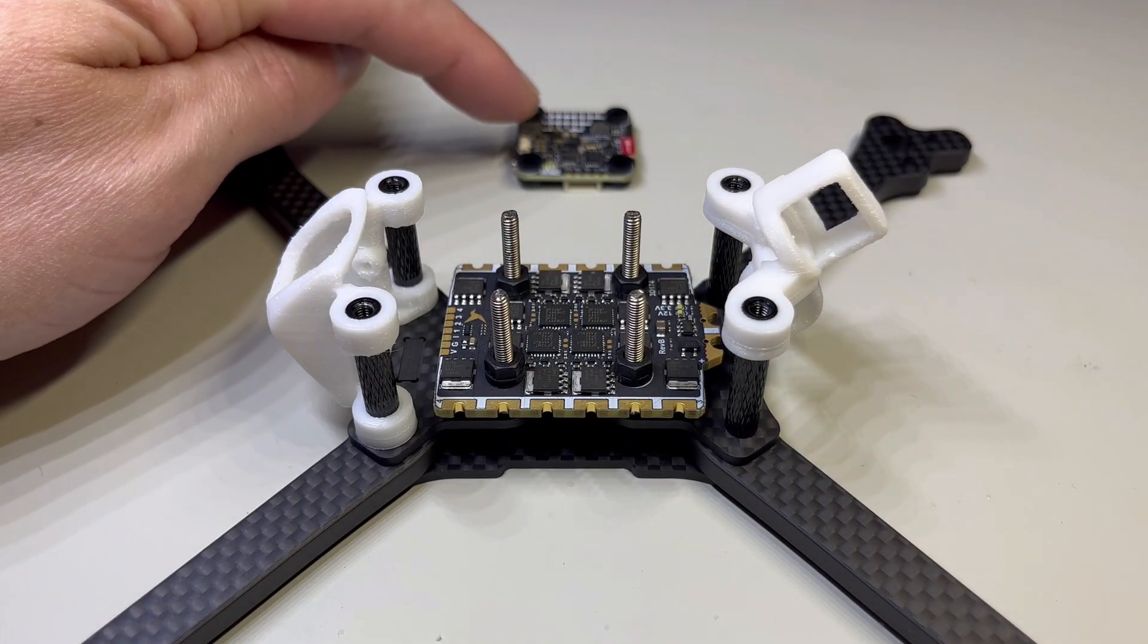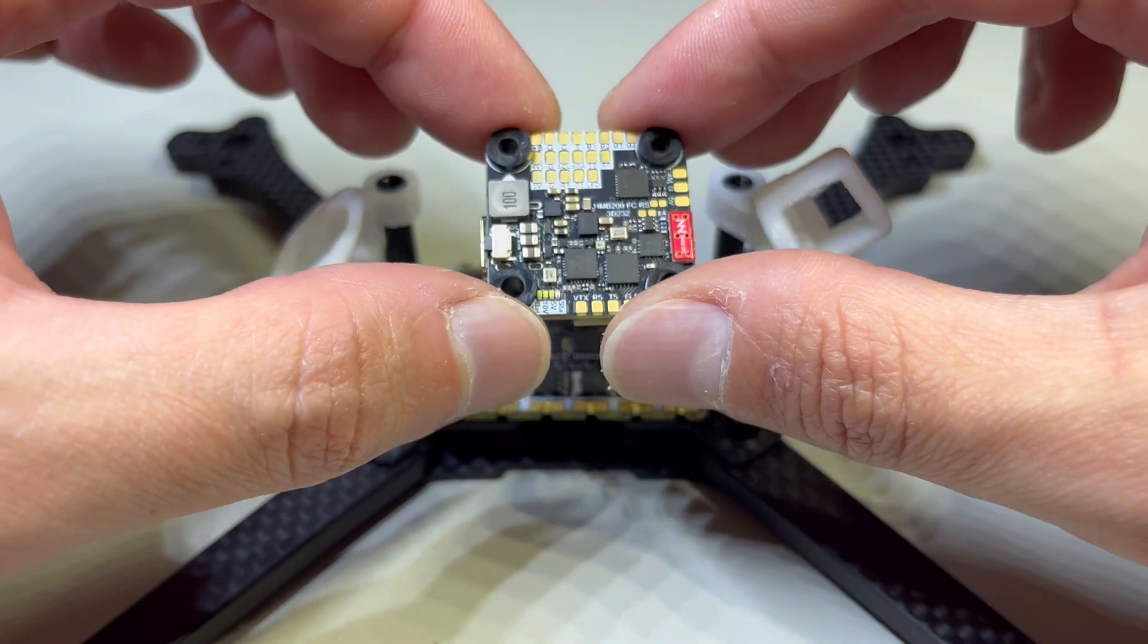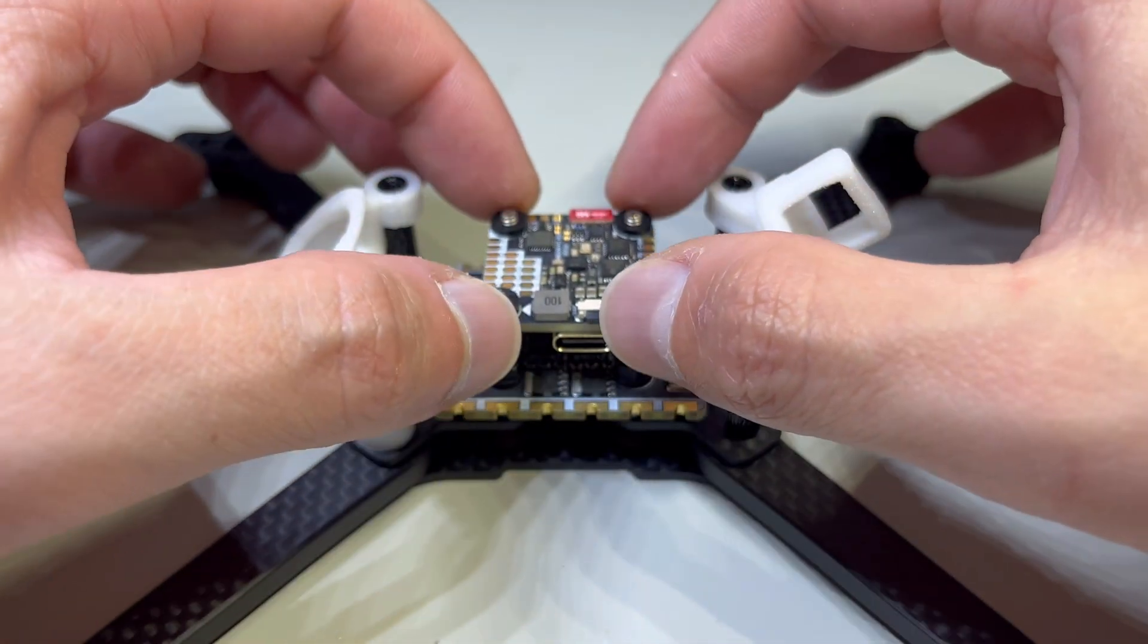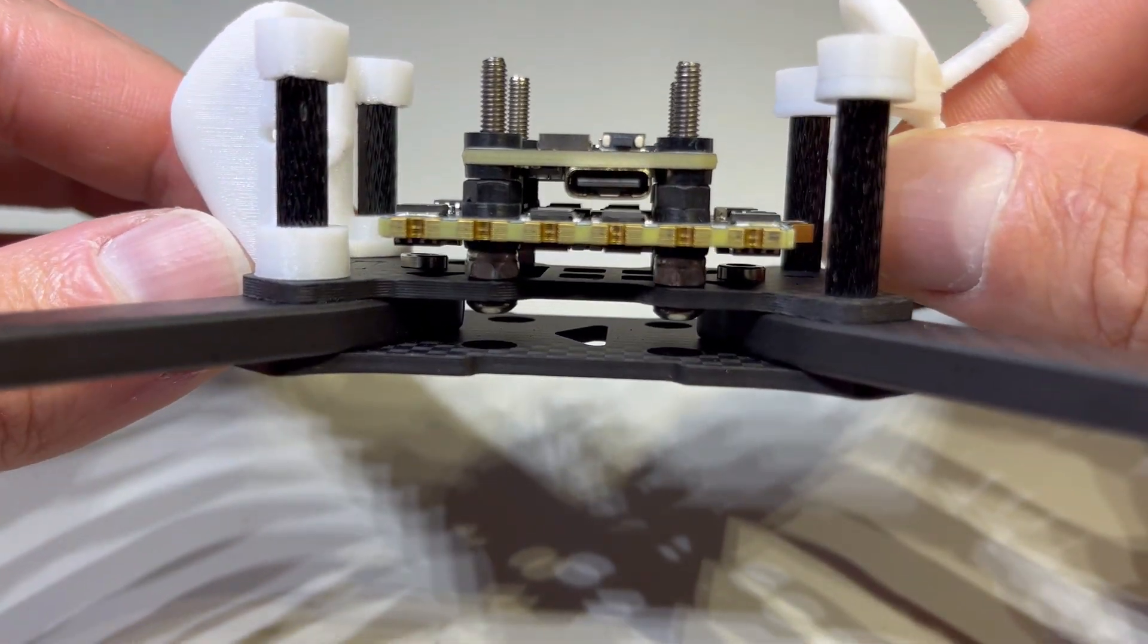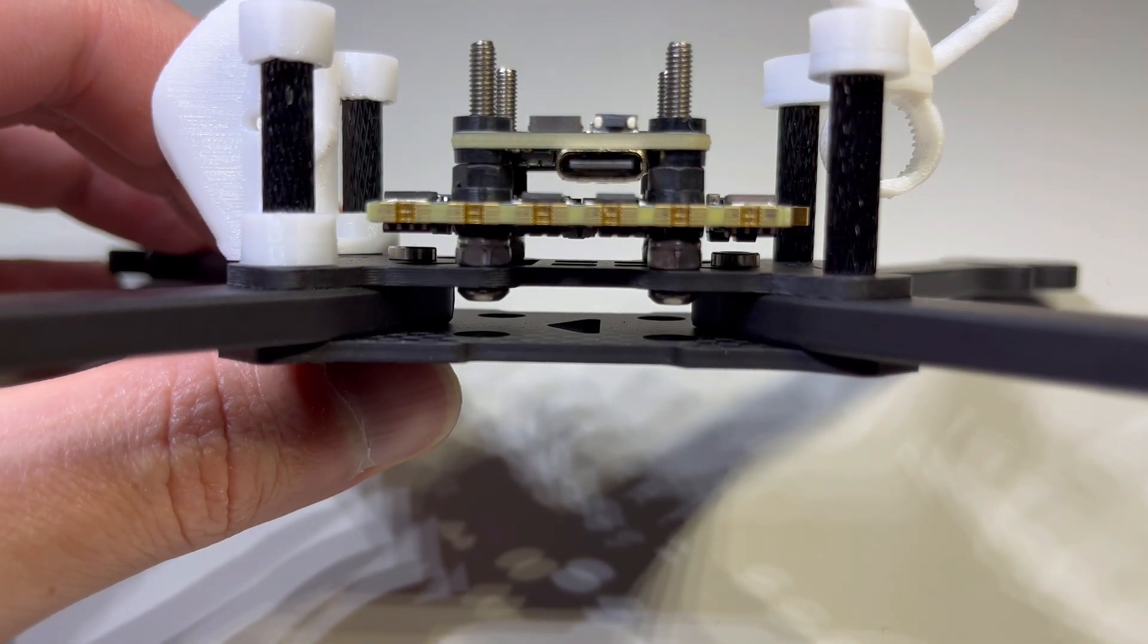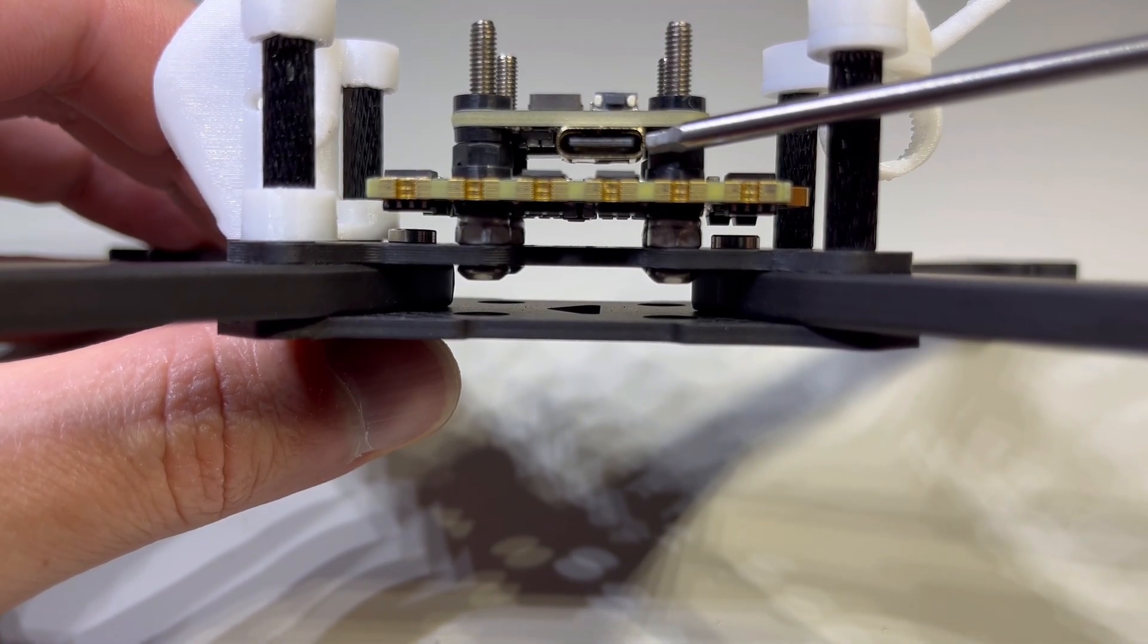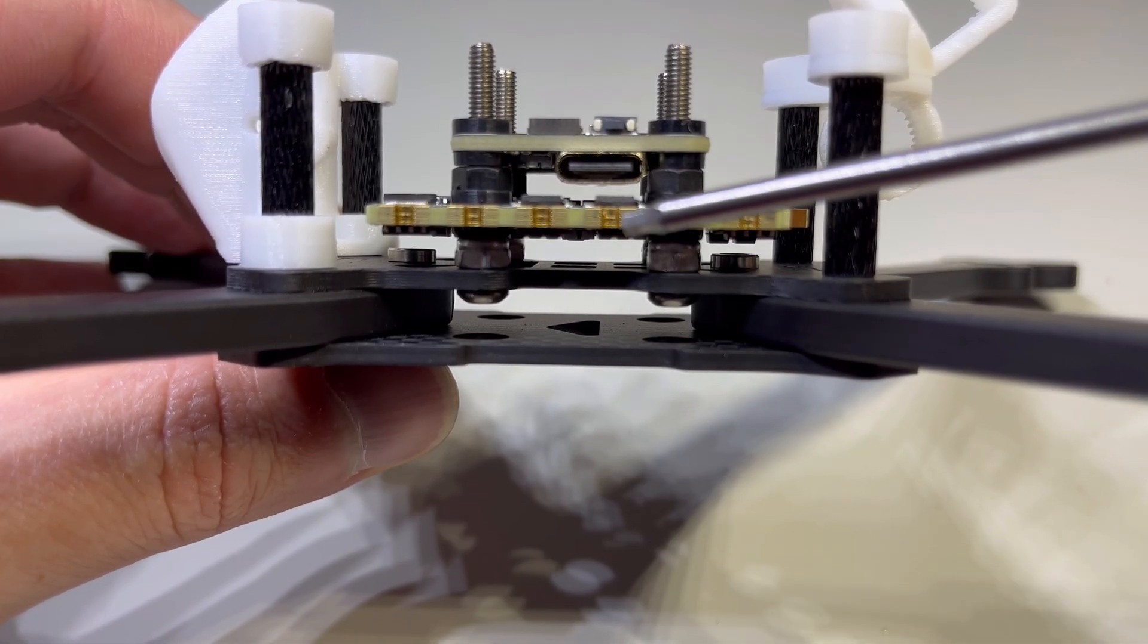Next, we'll put our flight controller on. The flight controller has the same exact gummies that the ESC does. The gummies are not too tall. So once we slide that on there, we'll see that we have just enough space between the flight controller and the ESC. This particular flight controller has the USB on the bottom, so it's really crucial to have enough space between it and the top of the ESC.